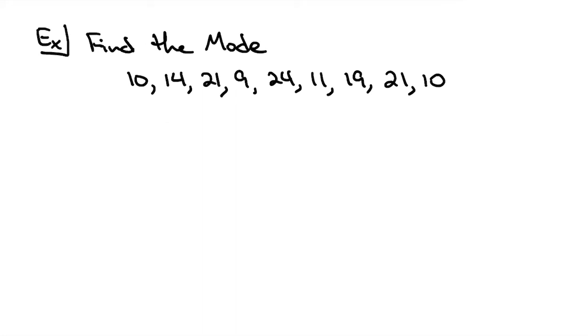Now for our next example is the mode, this is the number that occurs the most. So basically, you just have to go through the list and see which one occurs the most. I have a 10 and a 10. So there's two 10s. Looking at the list, I also have a 21 and a 21. So both of those numbers occur two times. You are allowed to have more than one number for the mode. In which case on this one, our modes, we would have more than one, would be 10 and 21. So that is allowed.